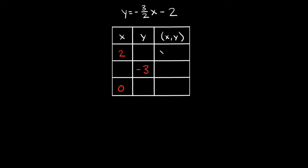We can actually already figure out part of it, because these numbers in red are given to us — we don't have to figure those out. So if the x-coordinate is given to us, we know the x-coordinate in this first row right here. It's a 2, so we know our x is a 2.